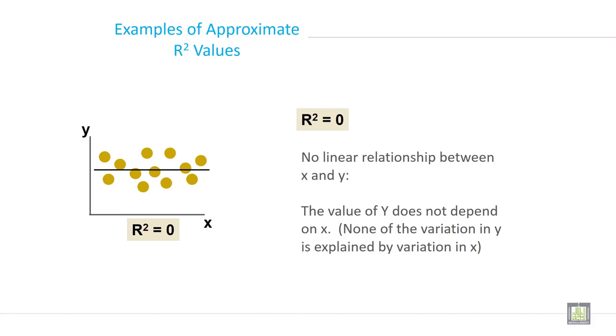Example of approximate r square values. How you can calculate or how you can interpret the r square values. So if r square is 0, no linear relationship between x and y. And the value of y does not depend on x. None of the variation in y is explained by variation in x.